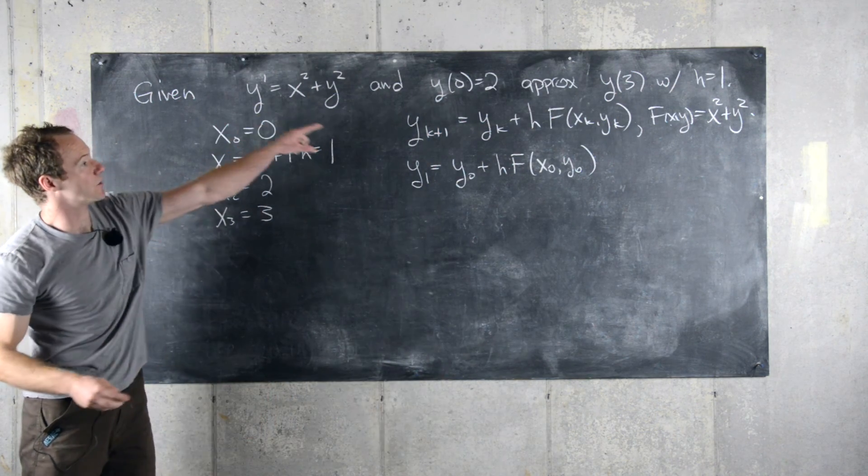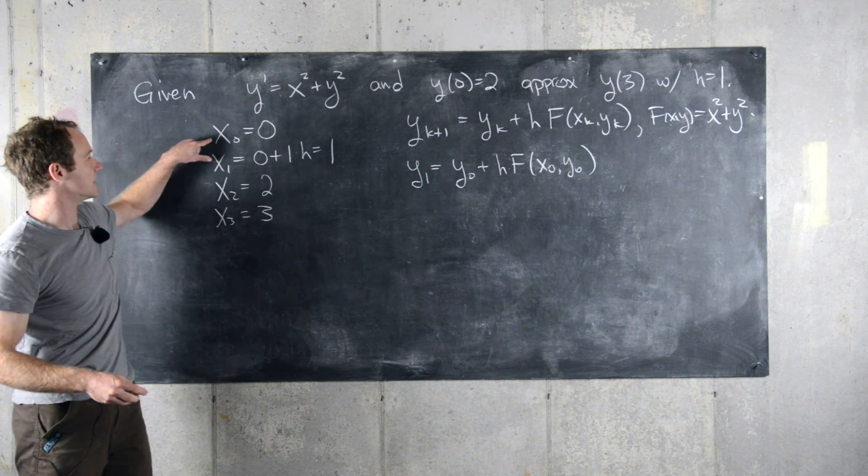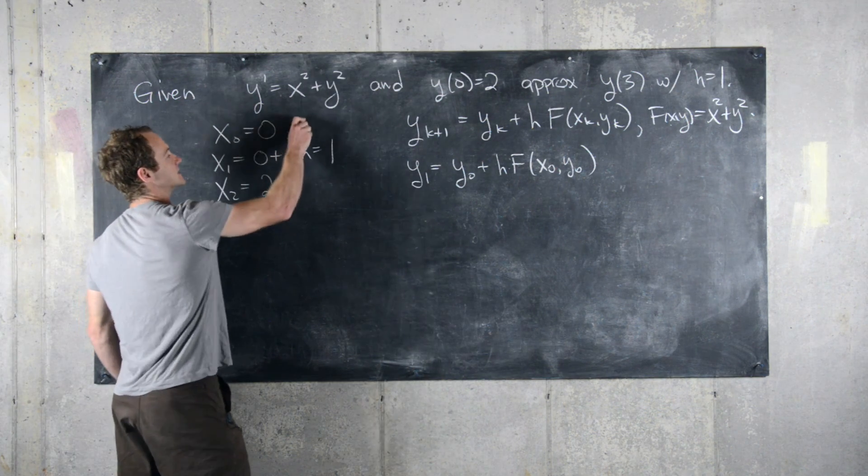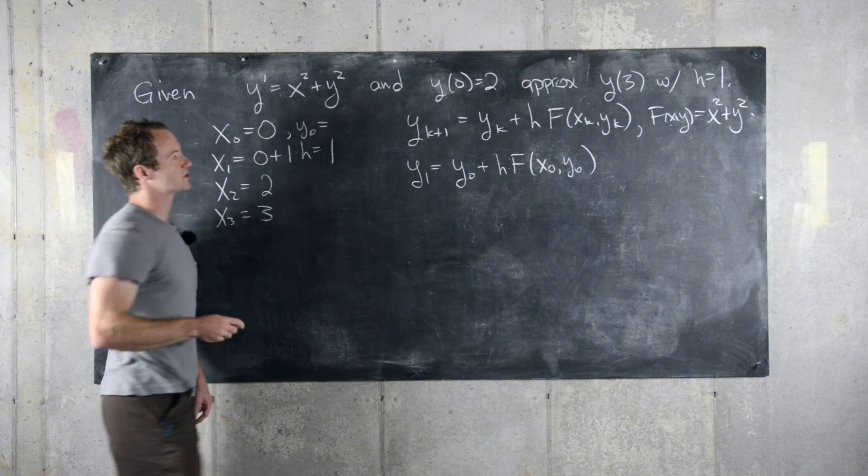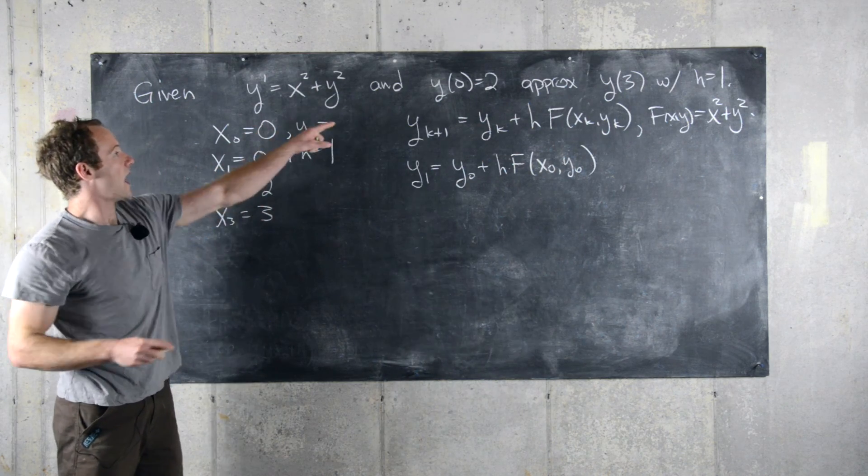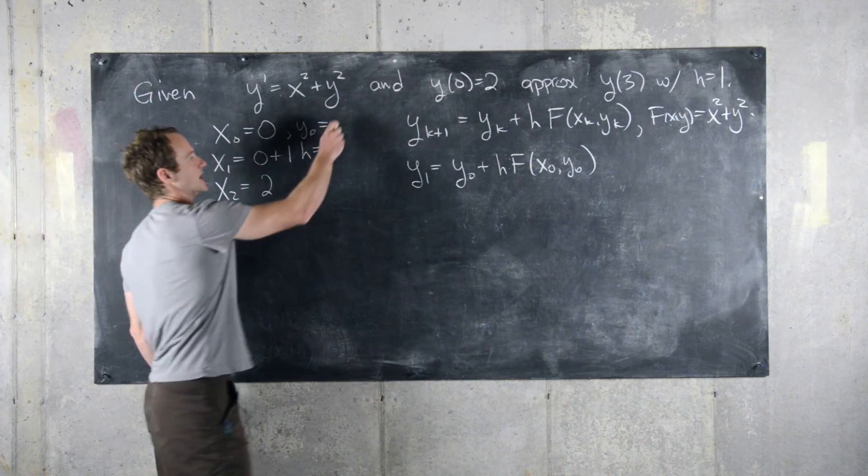But we know our initial condition, so x zero is zero, but that makes y of zero equal to y evaluated at x zero, so that's equal to two.